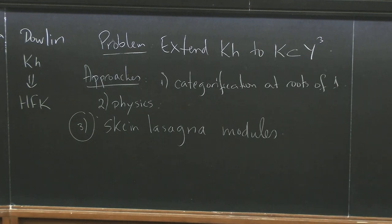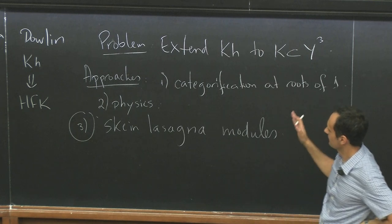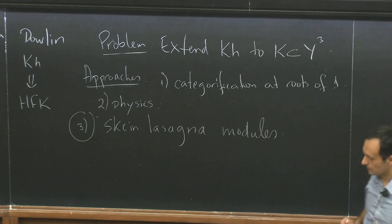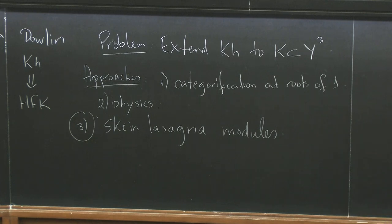And to motivate them, let me first explain the analog at the decategorified level. So you can ask for the Jones polynomial. How do we extend Jones polynomial of links to links in other three manifolds?